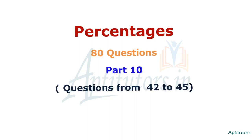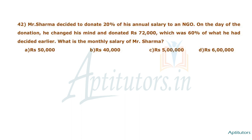Hello everyone, in this video we will discuss questions number 42 and 45. Mr. Sharma decided to donate 20% of his annual salary to an NGO. On the day of the donation, he changed his mind and donated 72,000 rupees, which was 60% of what he had decided earlier. What is the monthly salary of Mr. Sharma?